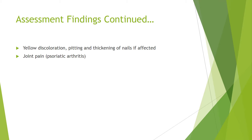Some more assessment findings include yellow discoloration, pitting and thickening of nails if the psoriasis is near the nails, as well as joint pain with psoriatic arthritis.